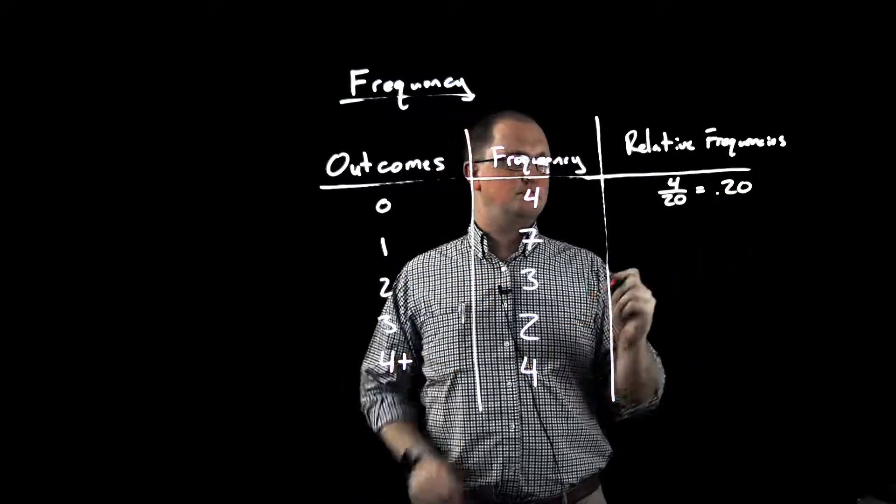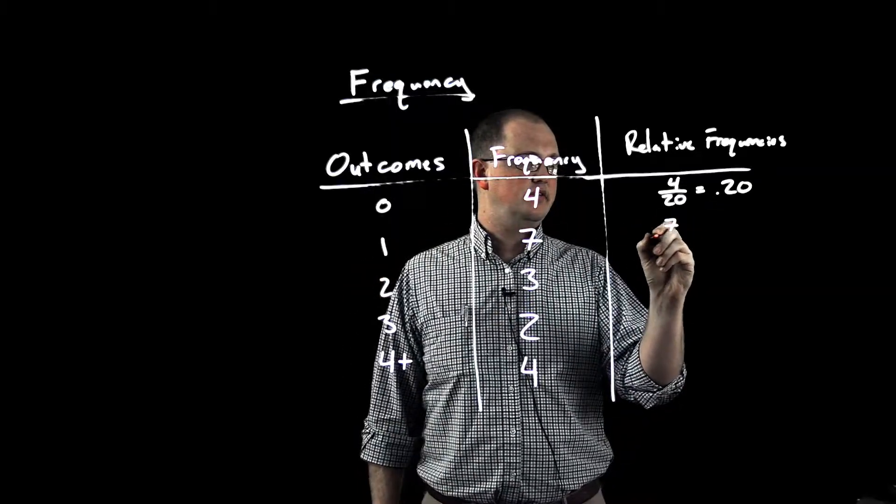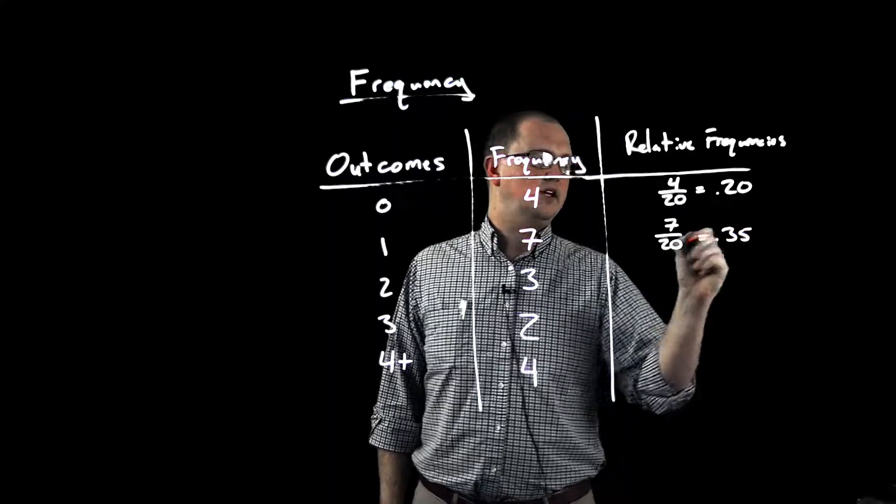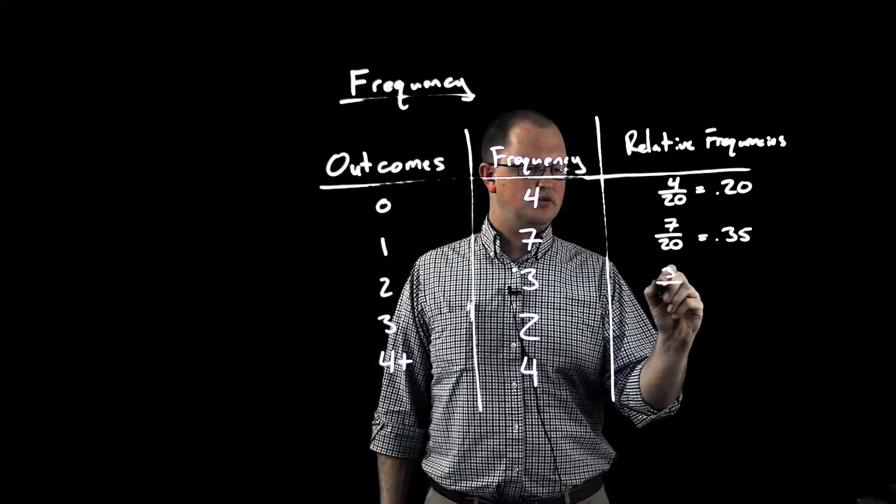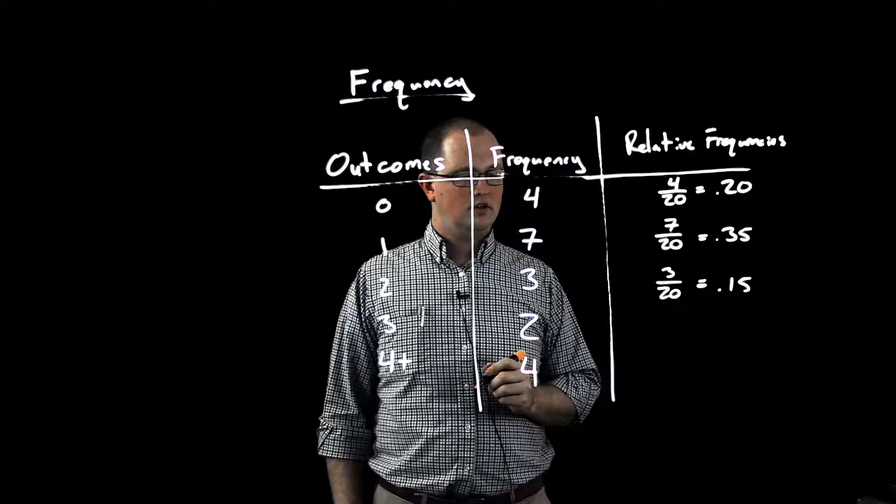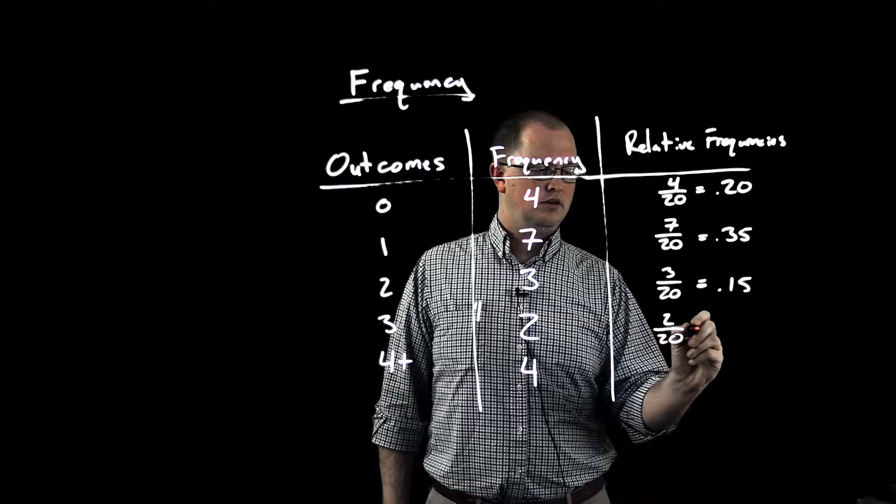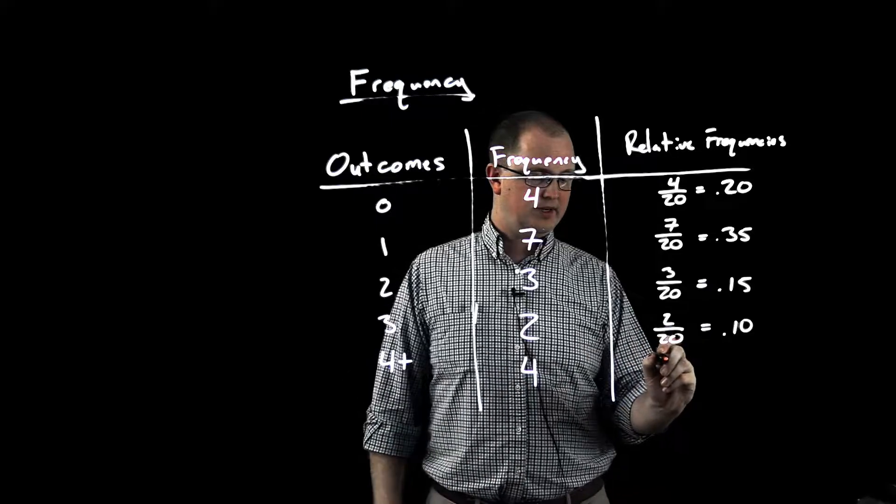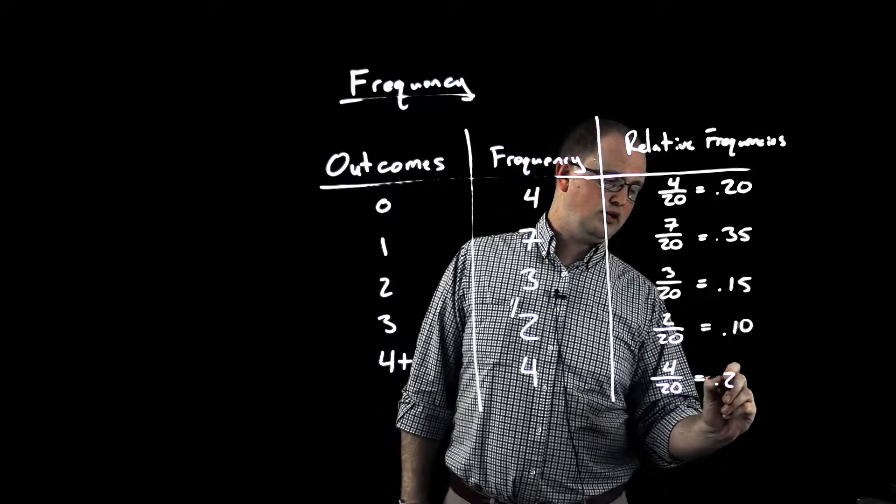We had the response of 1 seven times, so that's 7 out of 20, or 0.35. We got a response of 2 three times, so that's 3 out of 20, or 0.15. We got 3 twice, so that's 2 out of 20, or 0.10. And we got 4 or more four times, which is 4 out of 20, or 0.20.